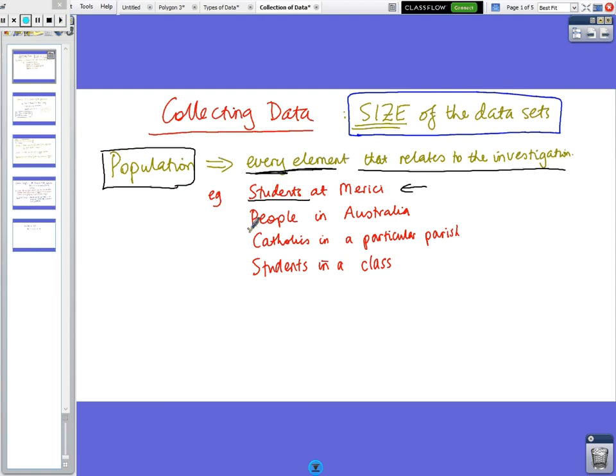A bigger one might be, the population might be the people in Australia, or another example might be the Catholics in a particular parish, or it might be the students in a class. So any of those things is a population.